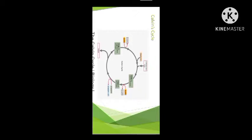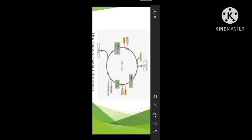Two molecules of NADPH are used during the reduction step. For the synthesis of one molecule of glucose, 18 molecules of ATP and 12 molecules of NADPH are utilized. Since three molecules of ATP are needed per cycle and the cycle runs six times to synthesize one glucose, six times three gives 18 ATP molecules.